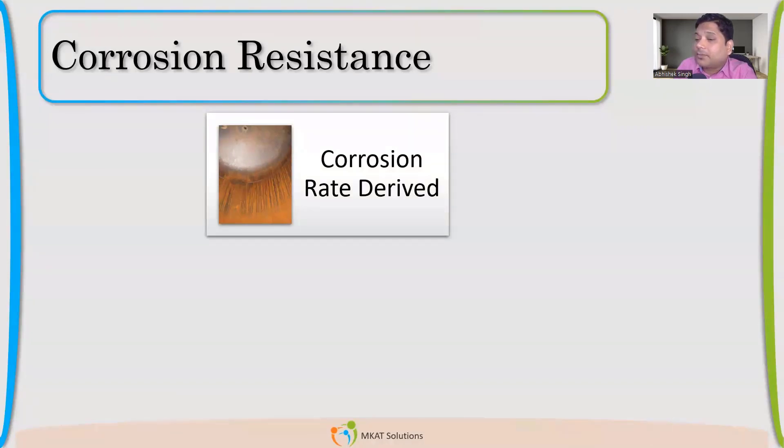Any thoughts on that? How can we determine what will be the corrosion rate? Like many times we see 3mm corrosion allowance is given or 1.5mm. What exactly might be the basis of that?